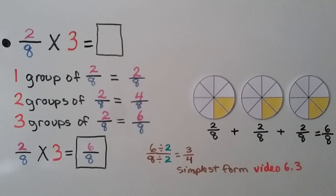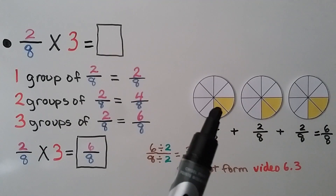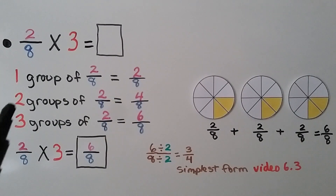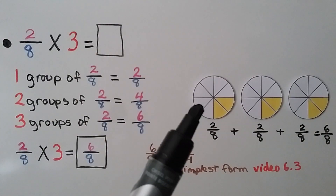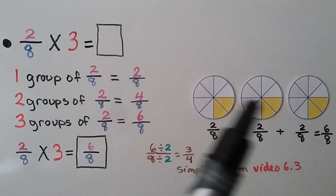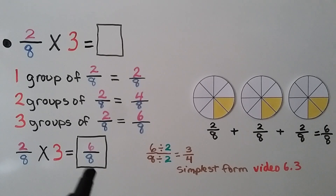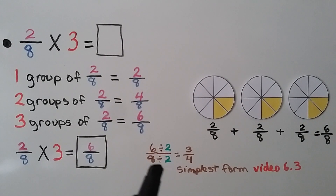Here we have 2 eighths times 3. We need to find the product. That means we have it 3 times. 1 group of 2 eighths is 2 eighths. 2 groups of 2 eighths is 4 eighths. And 3 groups of 2 eighths is 6 eighths. So 2 eighths times 3 is equal to 6 eighths. We can write this in simplest form by dividing the numerator and denominator by a common factor, 2. We get 3 fourths in simplest form.